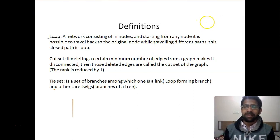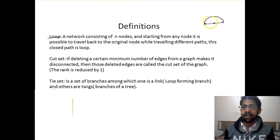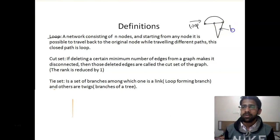Like in the previous example, we can identify parts of the graph which form loops. We will call this part a loop, and this other part is another loop. So all these closed paths are loops in a graph.